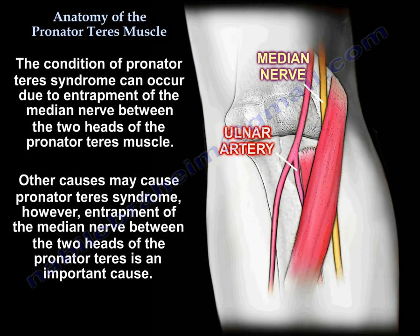A condition called pronator teres syndrome can occur due to entrapment of the median nerve between the two heads of the pronator teres muscle. Other causes may also produce pronator teres syndrome; however, entrapment of the median nerve between the two heads of the pronator teres is an important cause.